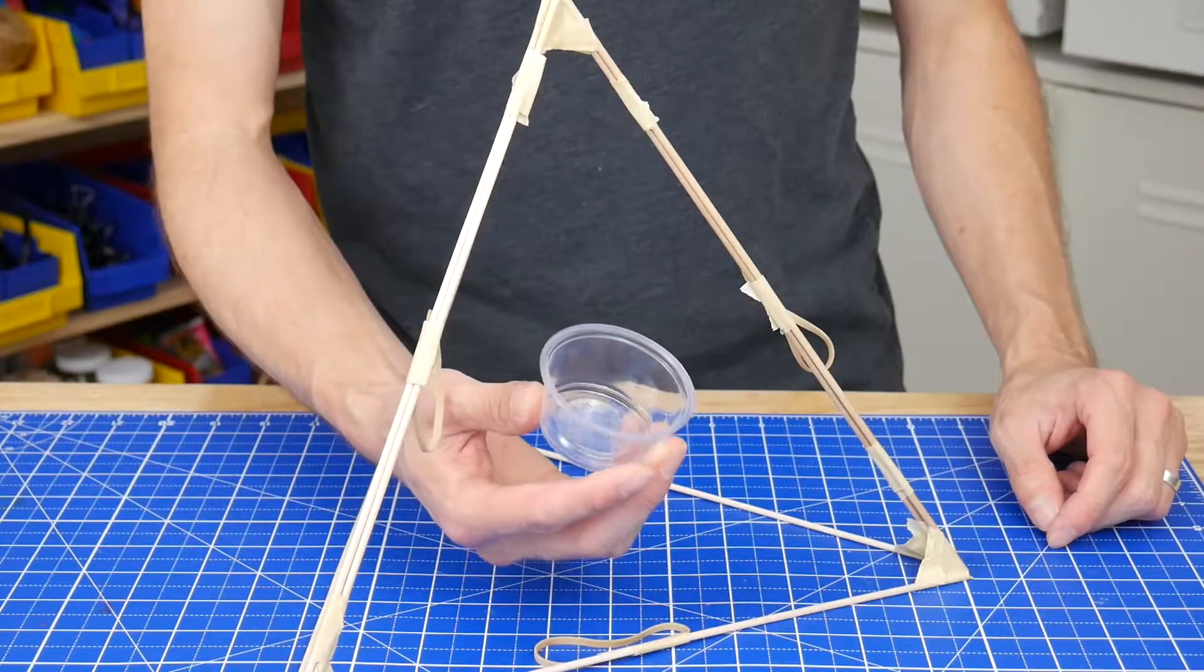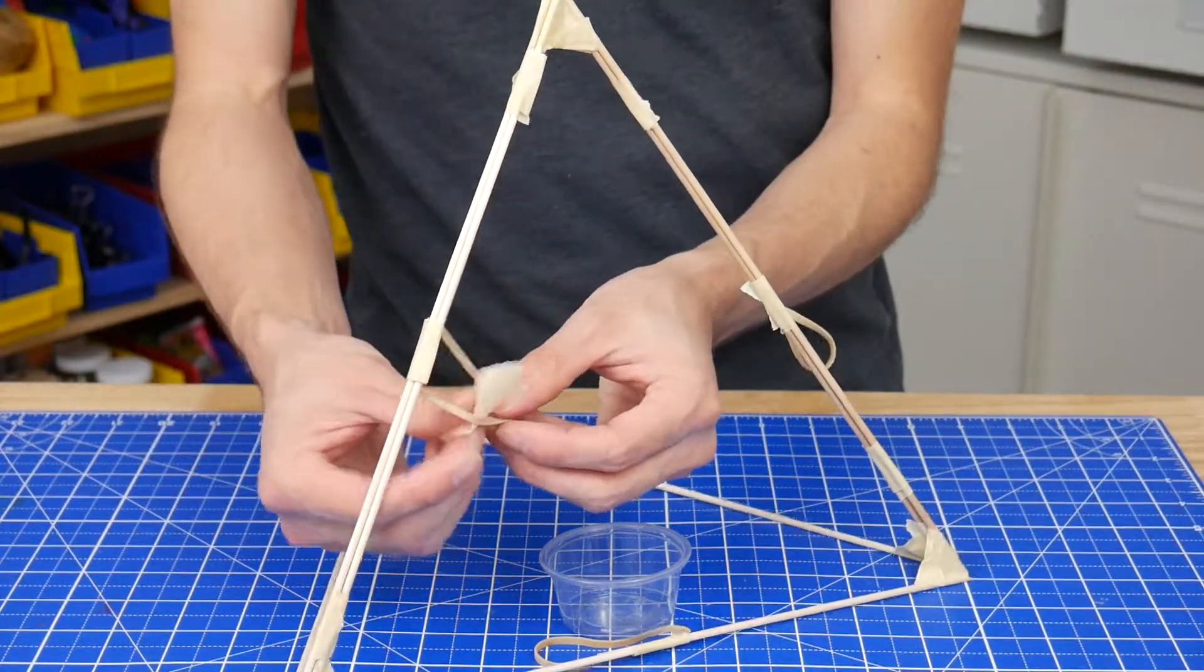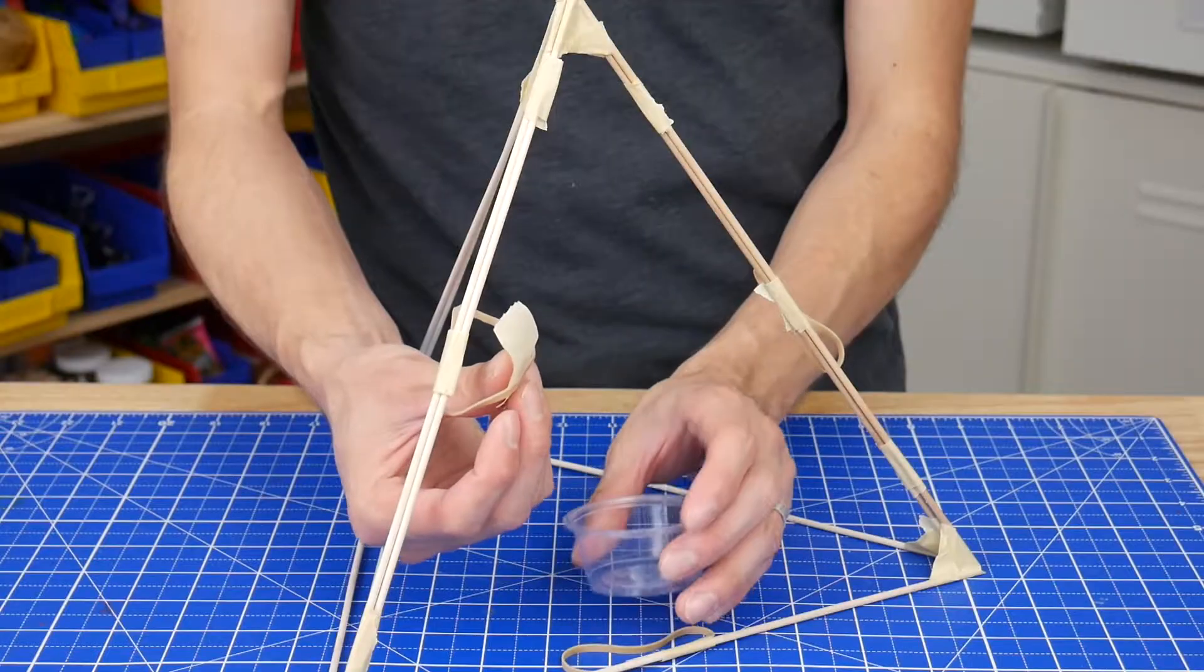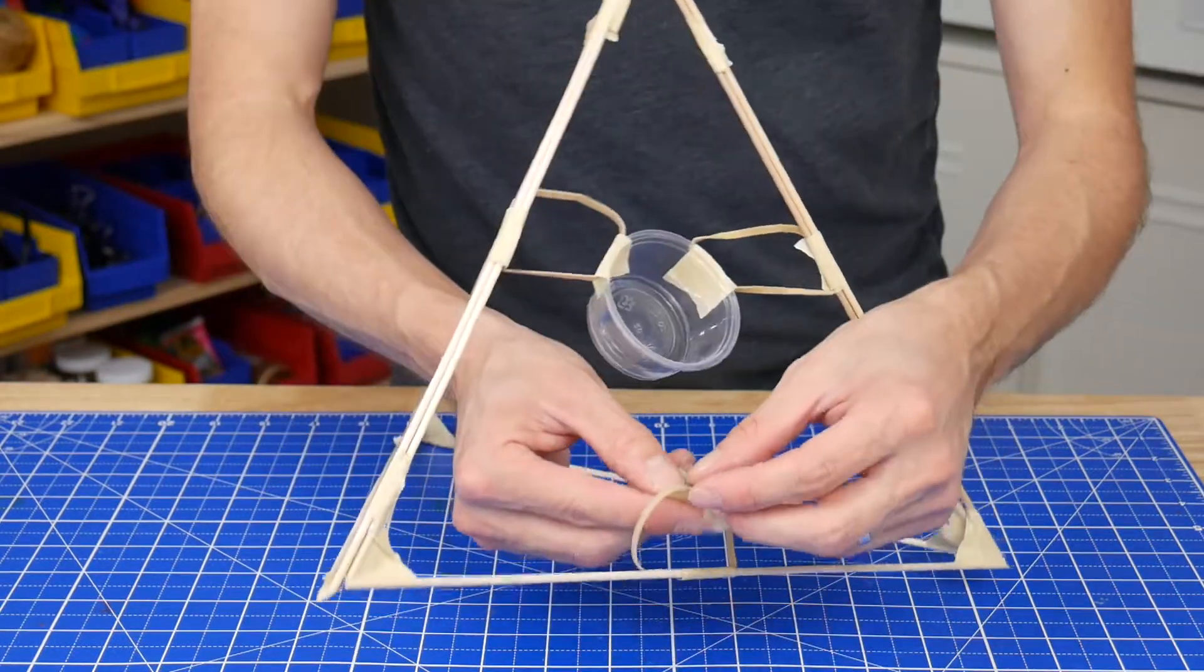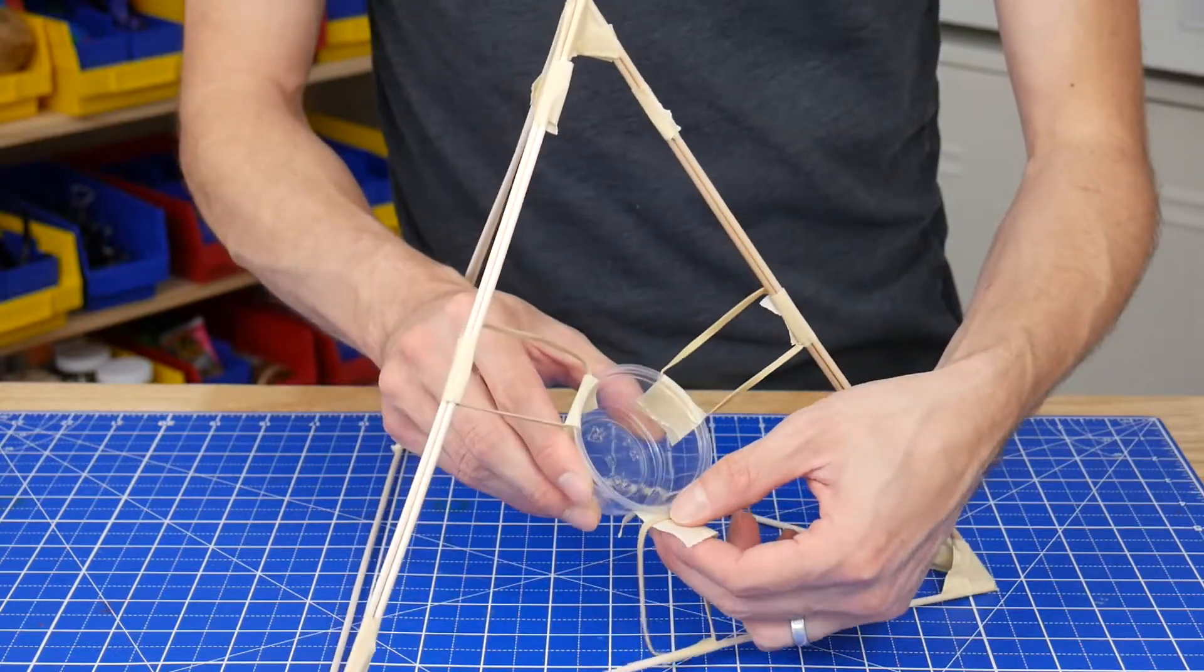The last step is to tape on the cup. Just like before, the easiest way to do this is to put the tape inside the rubber band first, and then attach that onto the cup. Repeat with all three rubber bands.